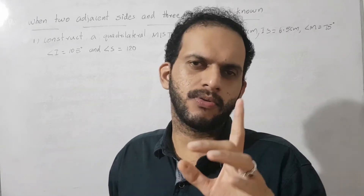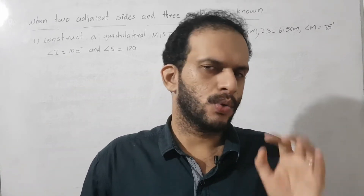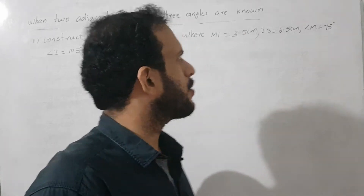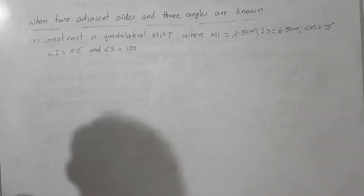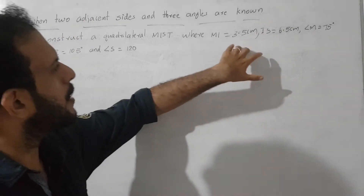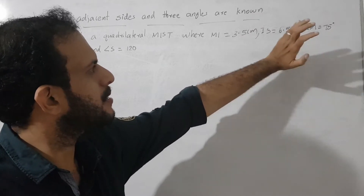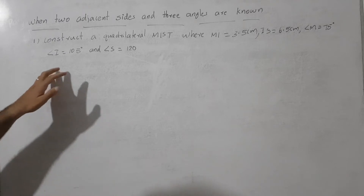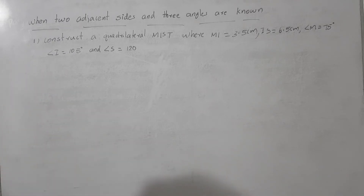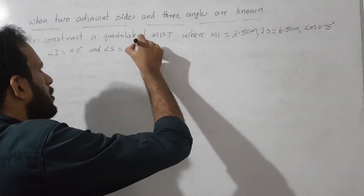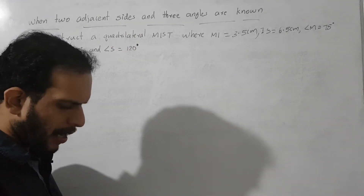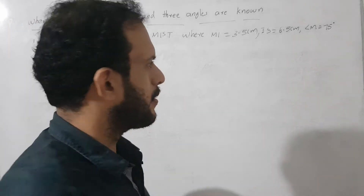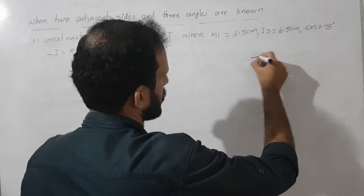So we know that for every construction, the first step is to construct a rough figure. Here also we are constructing a rough figure. The question is: construct a quadrilateral MIST where MI is equal to 3.5 cm, IS is equal to 6.5 cm, angle M is equal to 75°, angle I is equal to 105°, and angle S is equal to 120°. Based on this, we first construct a rough figure.